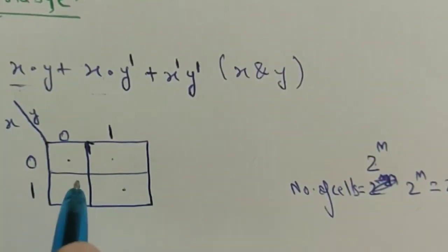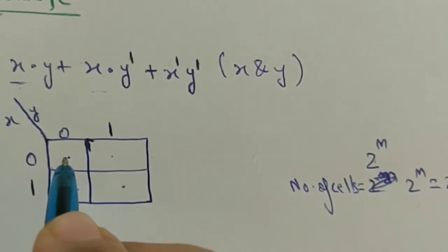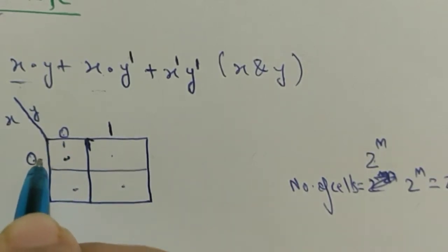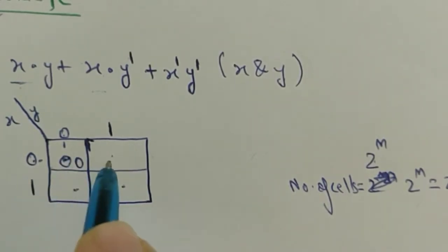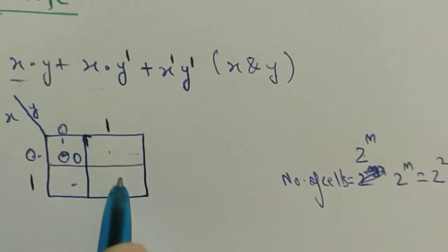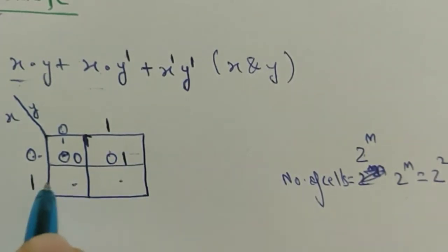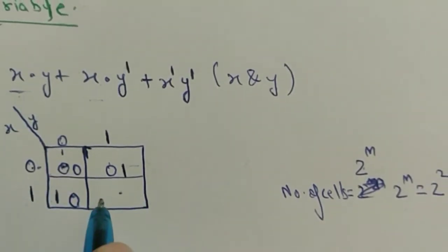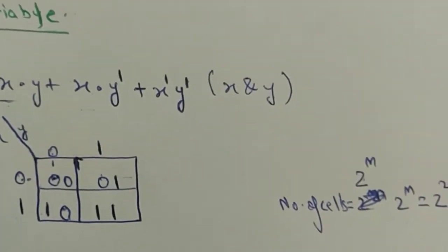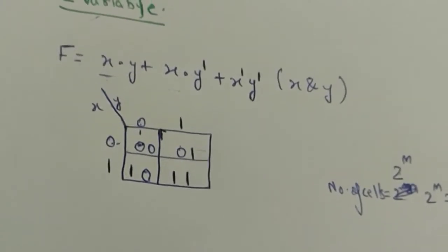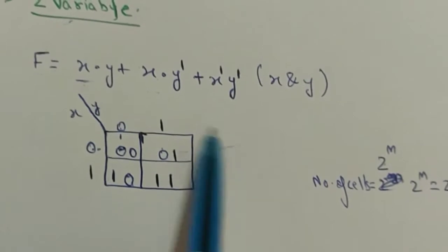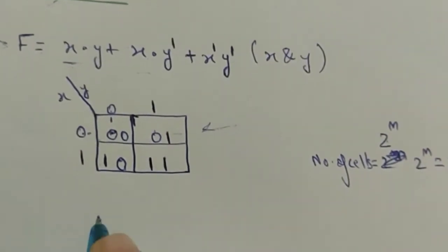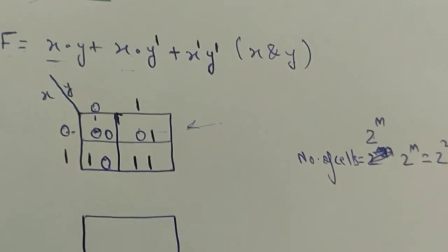Now we have to fill the cells. For filling a cell, you look at its row and its column. The element for the first cell is 0,0; the second is 0,1; the third is 1,0; and the fourth is 1,1. This is how a K-map is drawn. Now we will draw the K-map for the function f and try to simplify it. We draw 4 cells because 2 to the power 2 is 4.